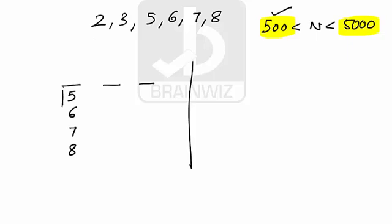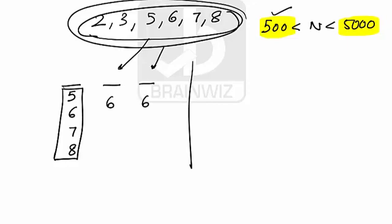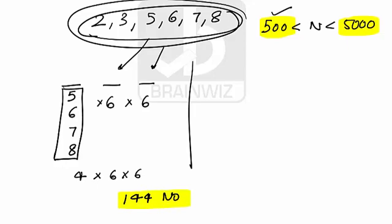So 4 digits can settle in the first place. Since repetition is allowed, all 6 digits can fill the second place, and again all 6 digits can fill the third place. The total for 3-digit numbers is 4 × 6 × 6 = 144 numbers. These are all 3-digit numbers more than 500.